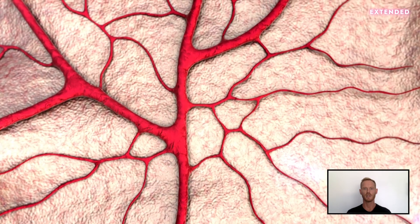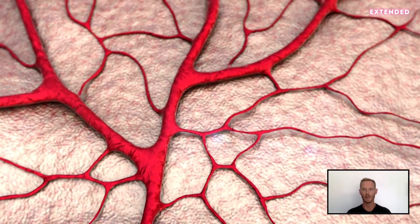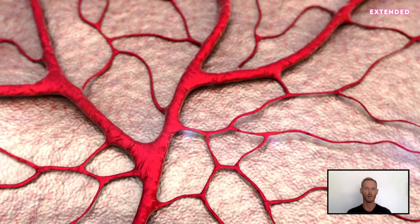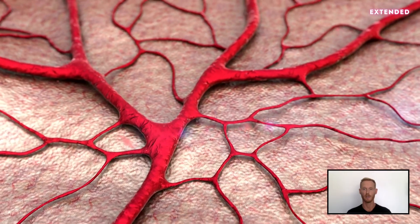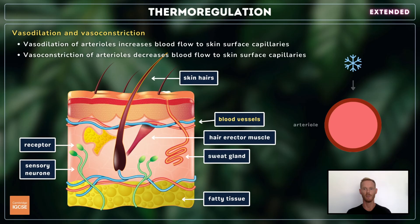Finally, body temperature is regulated through a process that involves the widening and narrowing of arterioles that supply the skin surface capillaries. When we feel hot, these arterioles vasodilate or widen, resulting in increased blood flow to the skin and heat loss through radiation. Conversely, when we feel cold, the arterioles vasoconstrict or narrow, which reduces blood flow and limits the amount of heat loss from the body.